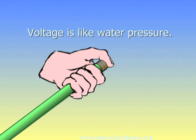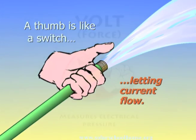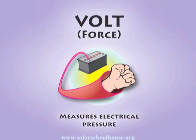And your thumb is like the switch in a circuit. When you let go, you let the current of water flow, just like flipping a switch lets electricity flow. So remember, voltage is measured in volts. Volts measure electrical pressure. We now know that voltage pushes current.